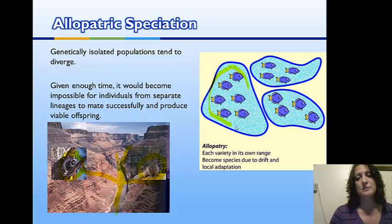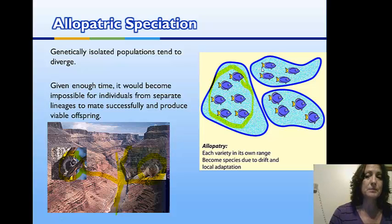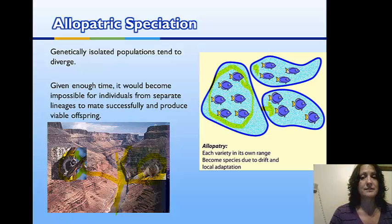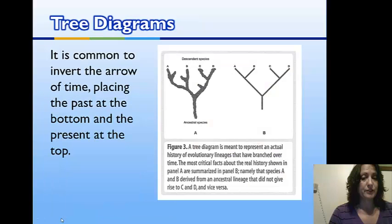Here's another example of speciation: we have a population of fish. If this group gets separated in, say, a northern region, and these individuals get separated in a southern region, they're subjected to different selective pressures. We end up with a speciation event — two different variations. If these fish were to come back together, they would no longer be able to reproduce. They've adapted to different environments with no gene flow between them for a long period of time.